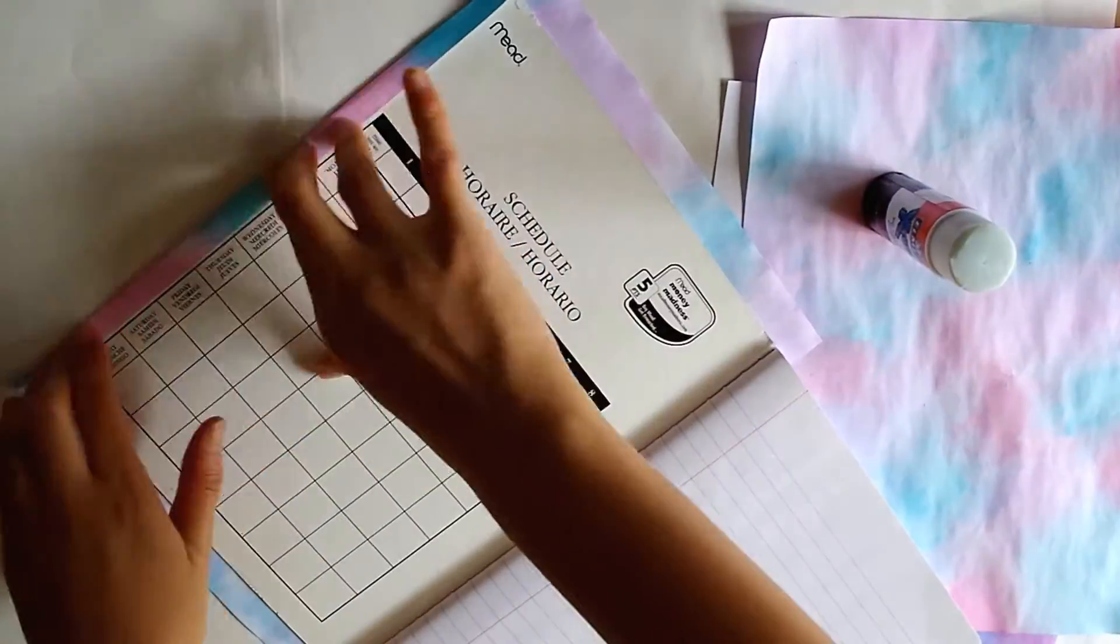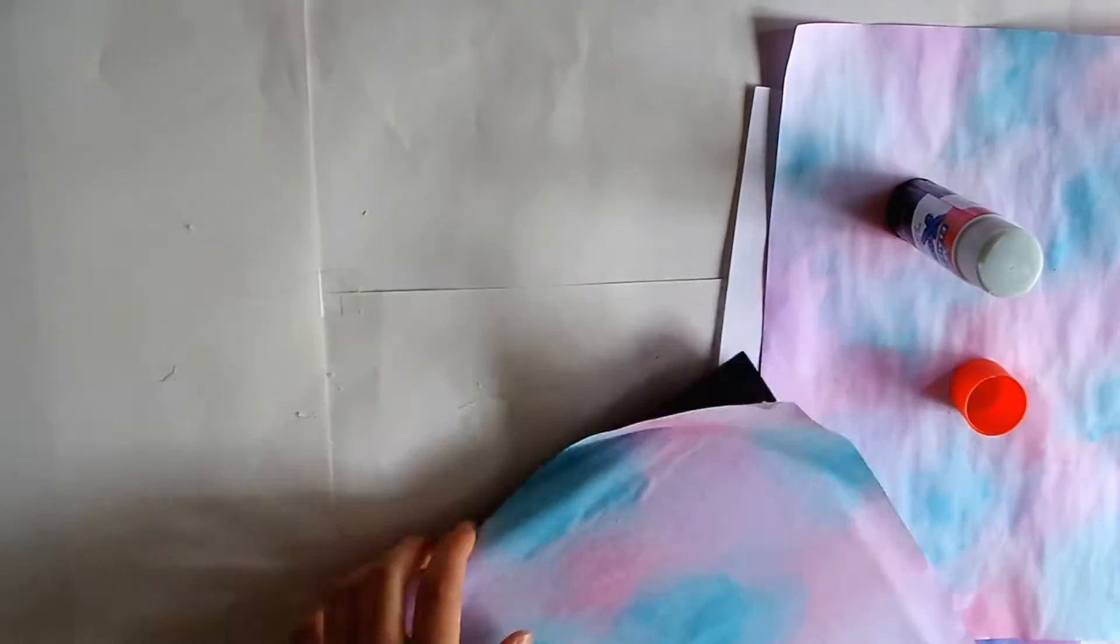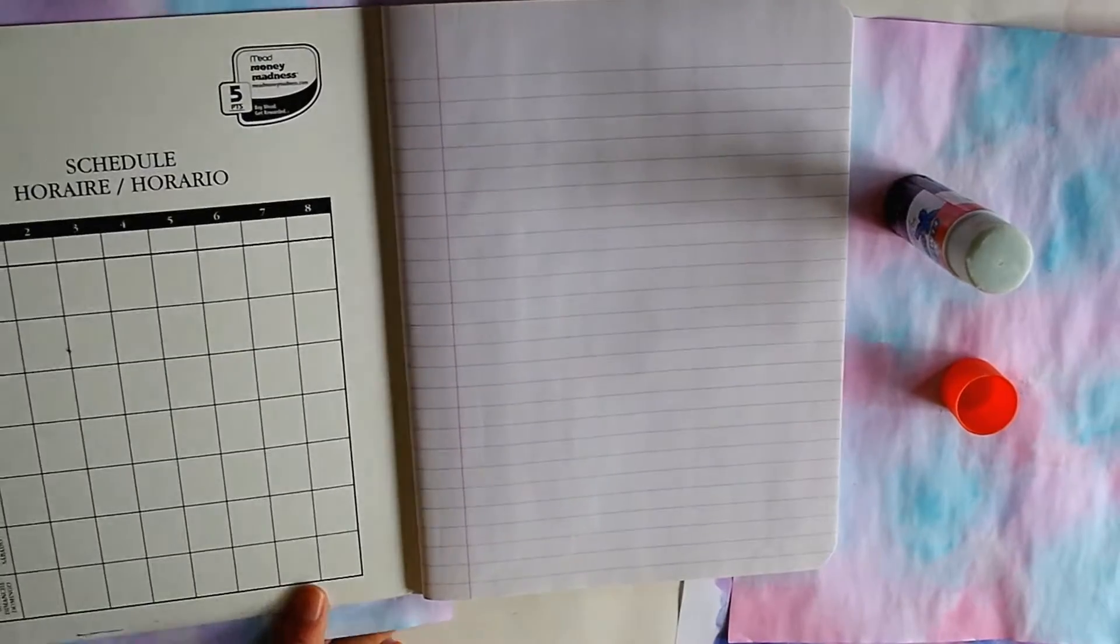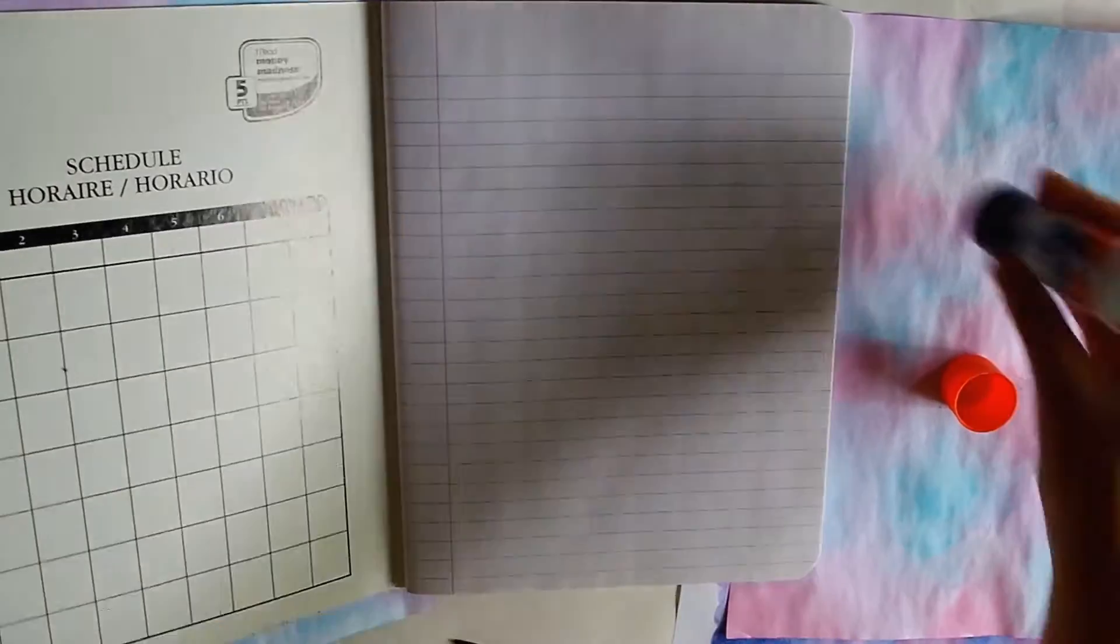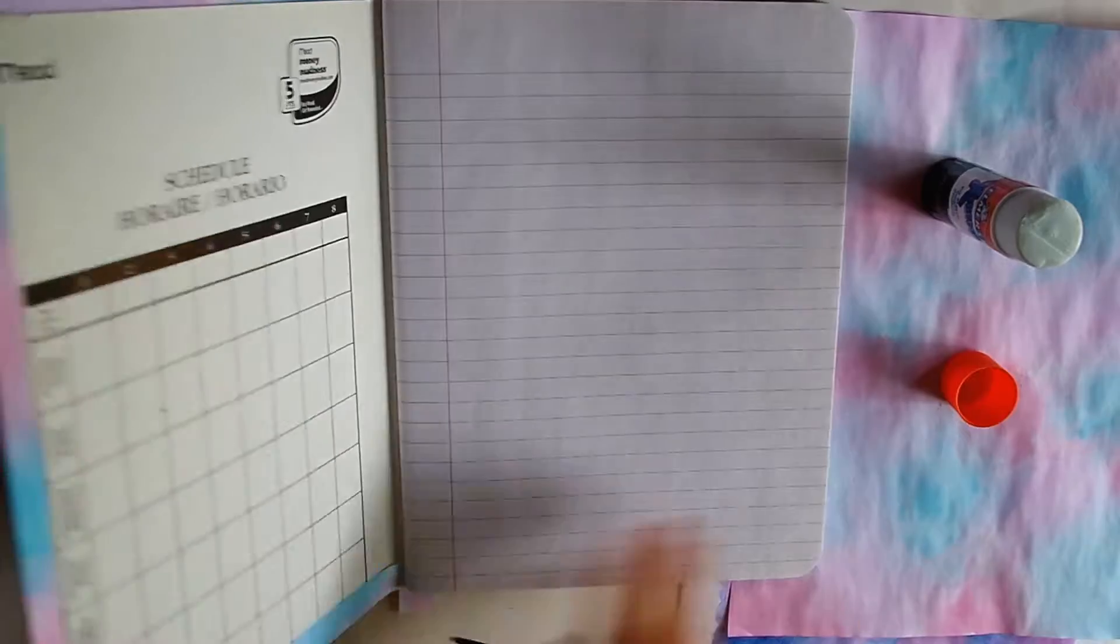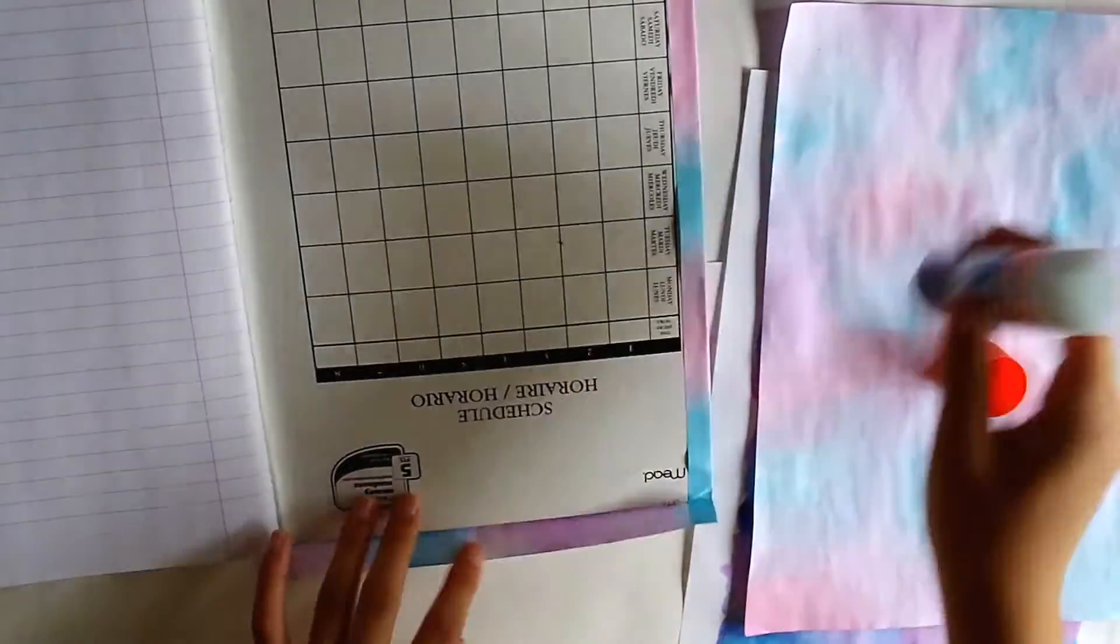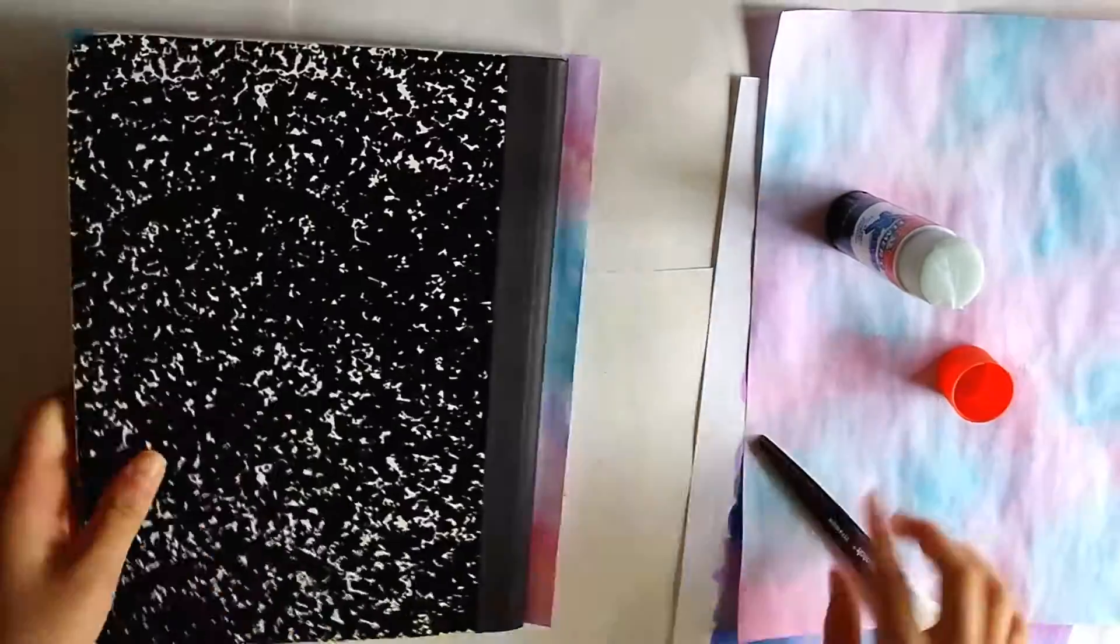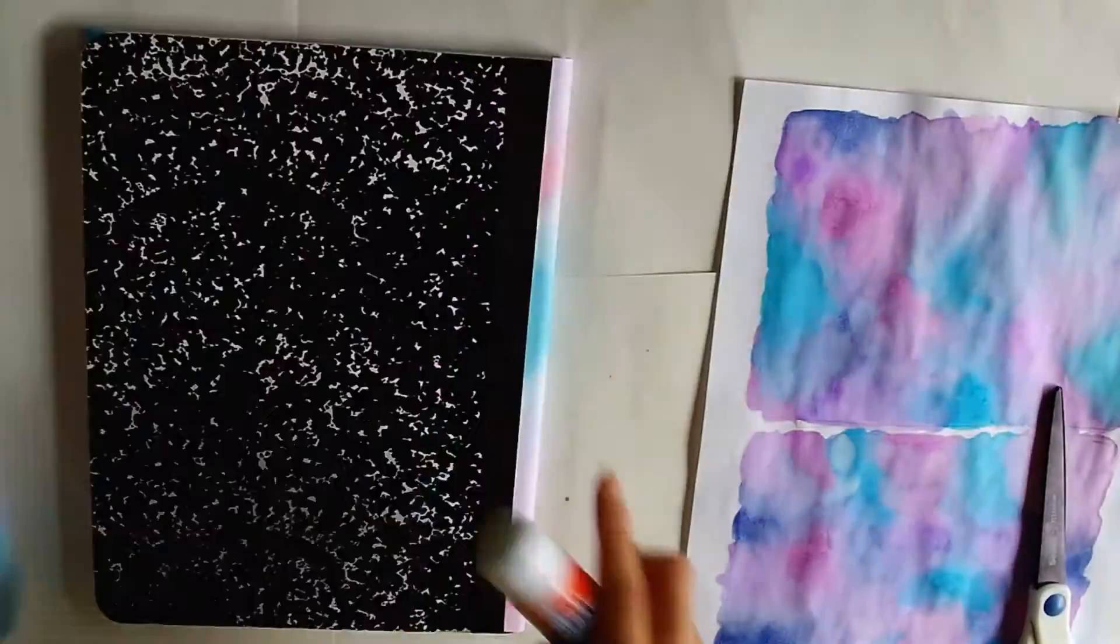Fold the extra parts of paper over the notebook cover then use your glue stick to glue them on. You may have to cut a little slit where the notebook spine is so that the paper can get glued down. Trim off the extra paper where the notebook spine is. Now repeat this for the back side of the notebook. Again, start by applying glue to the back of the notebook.